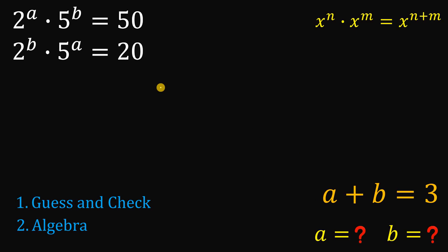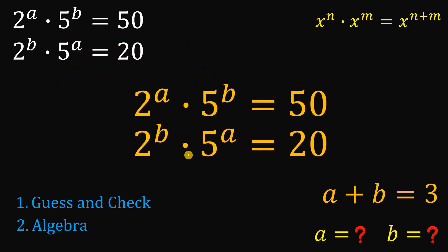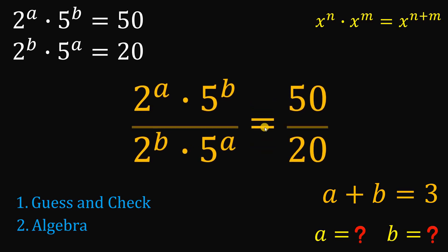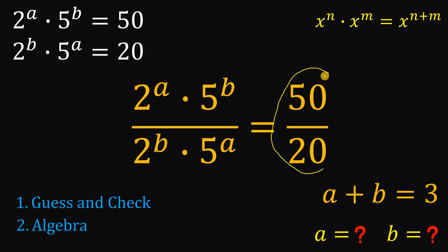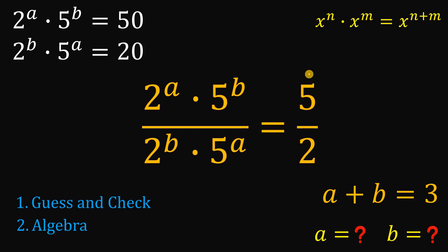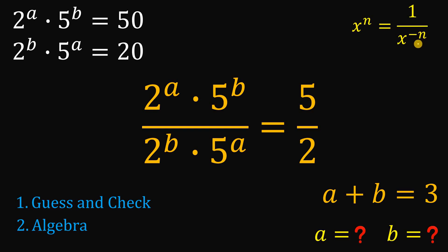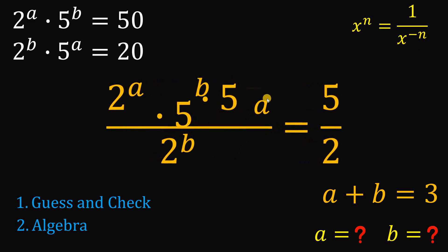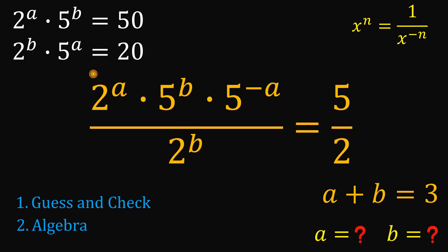Next, let's take our given equations again and instead of multiplying them, let's divide the two equations. So 50 divided by 20 is just 5 over 2. We'll use the law of exponents: when we take the reciprocal of x raised to the power of n, the exponent becomes negative. So the reciprocal of 5 raised to the power of a gives 5 raised to the power of negative a.